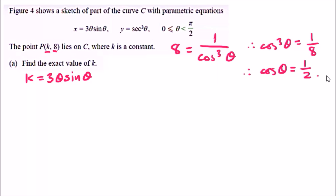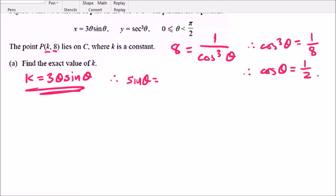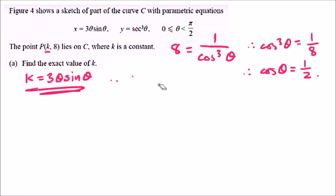There are two ways to approach this. You could use the first equation and make sinθ the subject, but you'd still have θ in the equation. Alternatively, the best approach is to find θ directly and plug in to find k. Using your calculator, finding cos inverse of 1/2 — remember to put it in radian mode — you should get π/3.